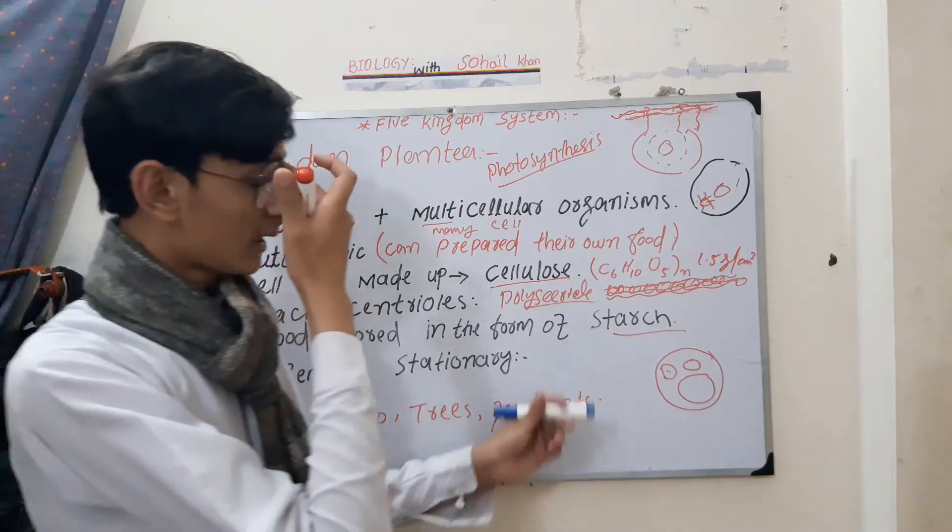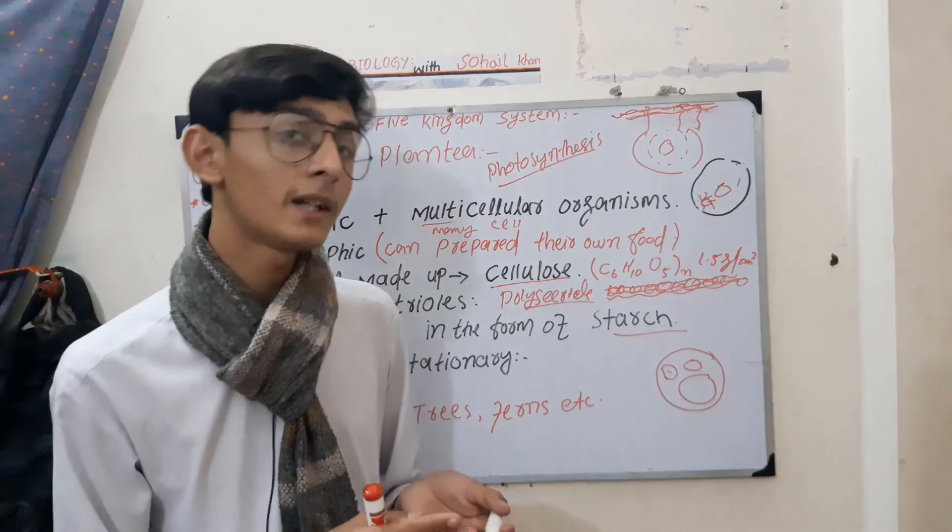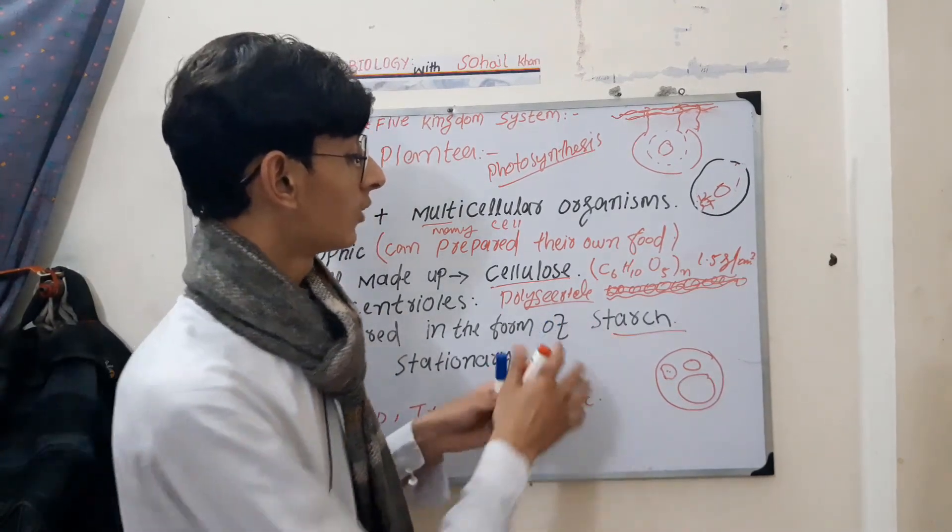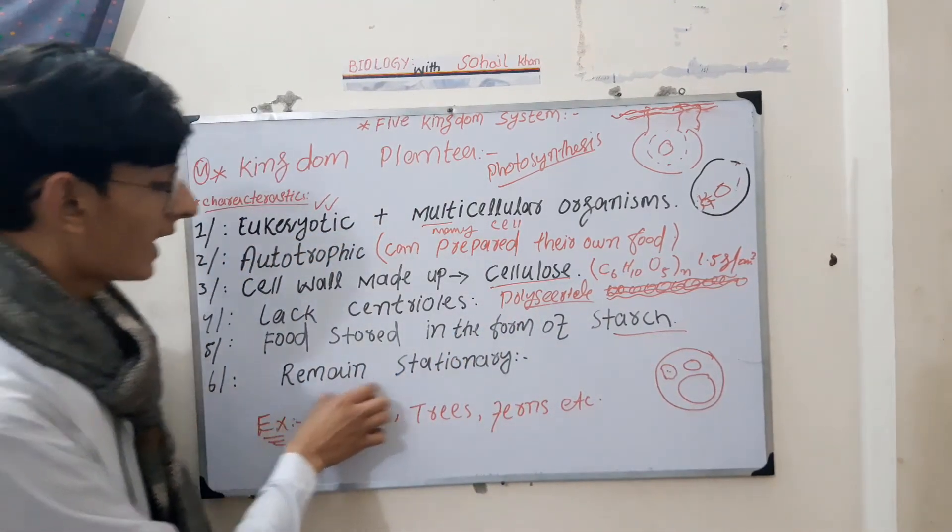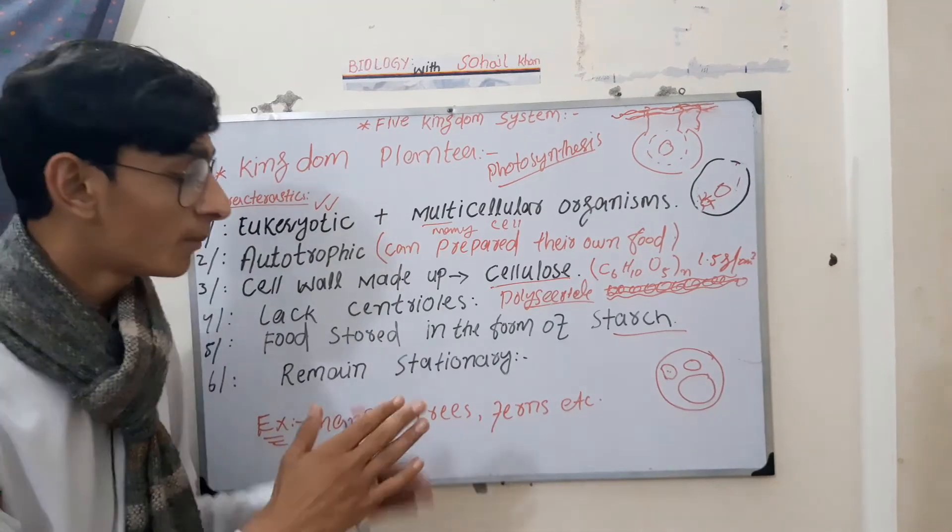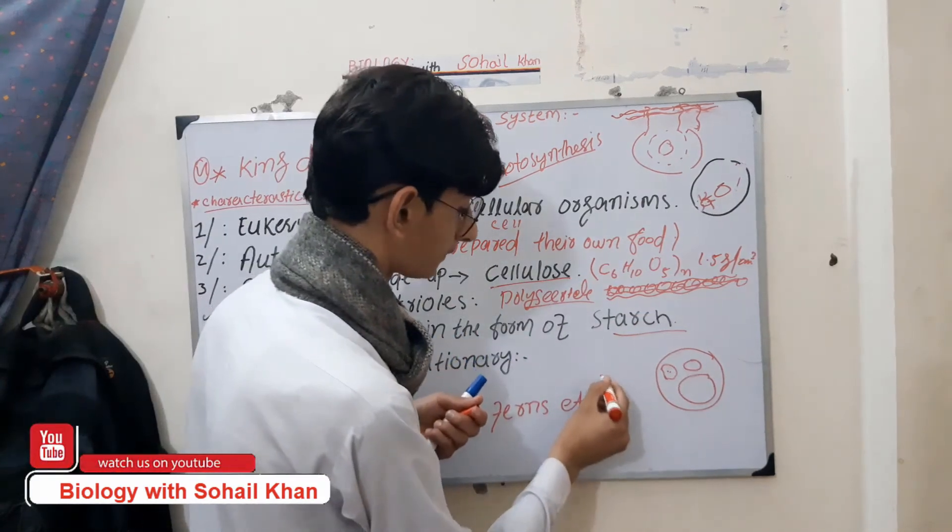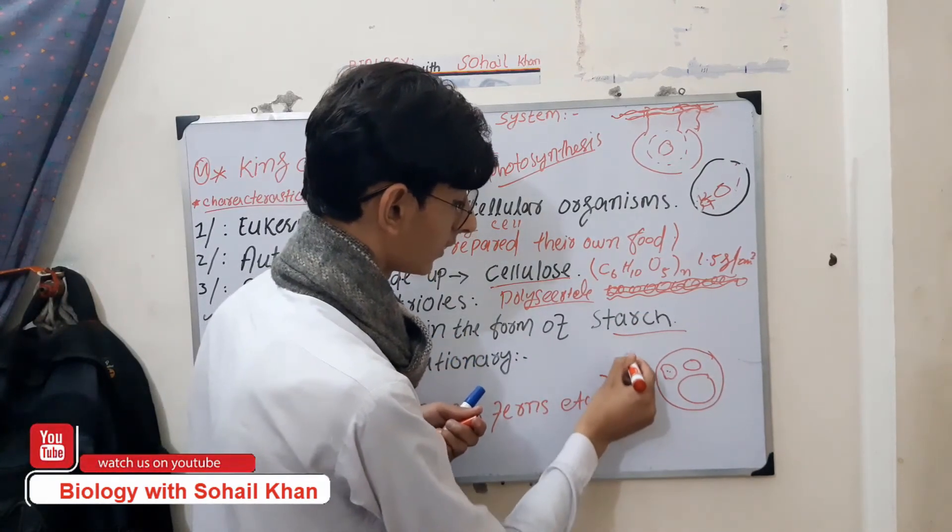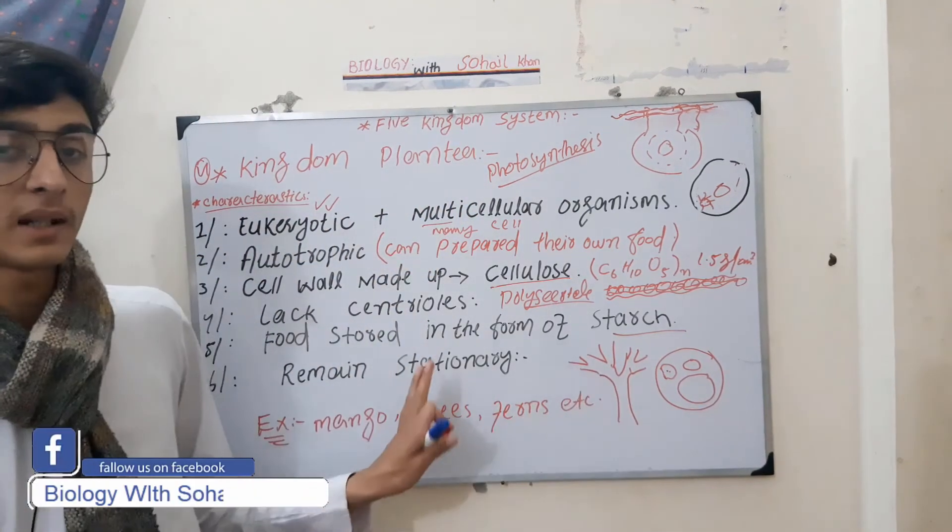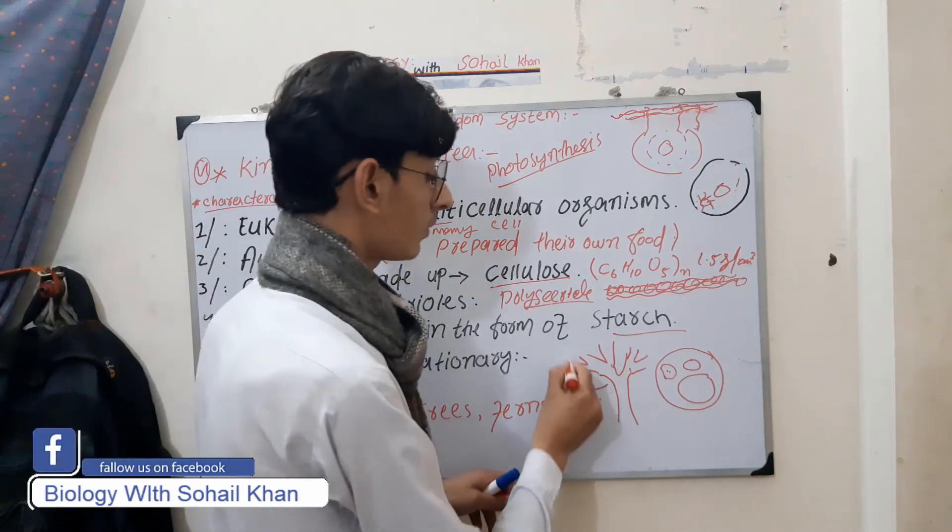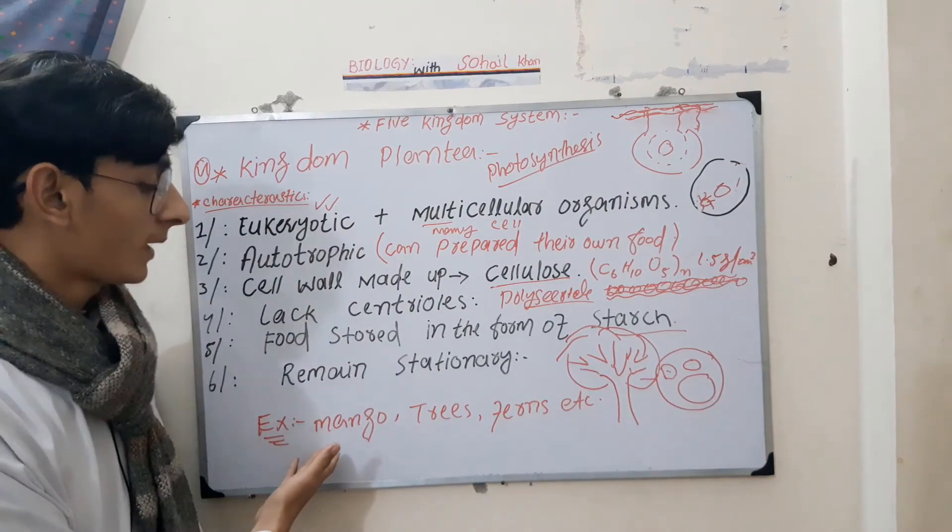When you start to study, you can study plants. They are stationary. Stationary - this means plants are stationary. For example, trees are stationary. There are many trees - what do they do? They are stationary, like trees.